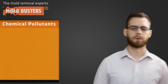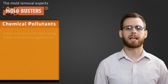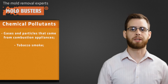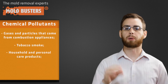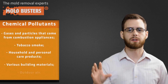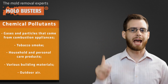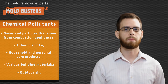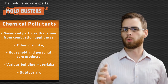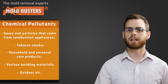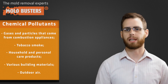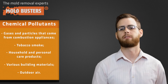Chemical pollutants are gases and particles that come from combustion appliances, tobacco smoke, household and personal care products, various building materials, and outdoor air. Remember that one — outdoor air — because later on we're going to explain why this is so important when testing for the indoor air quality of a home.